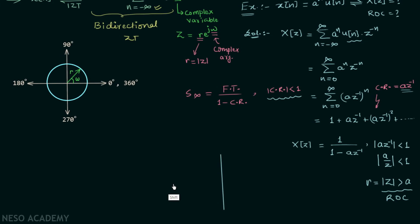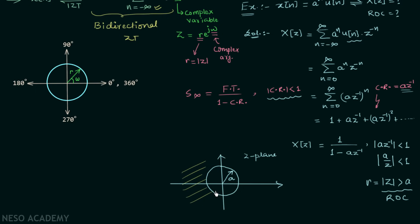Now we will plot the ROC on the Z-plane. We draw a circle having radius equal to a. Since the condition is R > a, the region of convergence is all the region outside this circle. The Z-transform will exist only within the region of convergence; outside the ROC, the Z-transform will not exist. Therefore, in this case the Z-transform exists outside this circle, and it is important to mention the ROC along with the expression of the Z-transform.